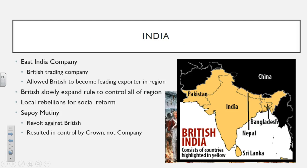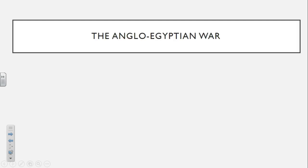Looking at this map, eventually the region — all considered India — is going to be split up into different regions, primarily based upon religion. India was predominantly Hindu, and Pakistan is predominantly Muslim, and that's going to be the reason they're going to be forming two different countries. Ultimately, it's going to lead to some tensions later on, but we'll not get into that right now.